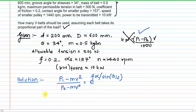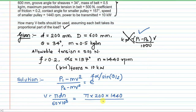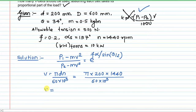First we calculate belt velocity: V = πDN / (60 × 10³), since diameter is in mm. Substituting: V = π × 200 × 1440 / (60 × 1000). This gives V = 15.08 m/s.